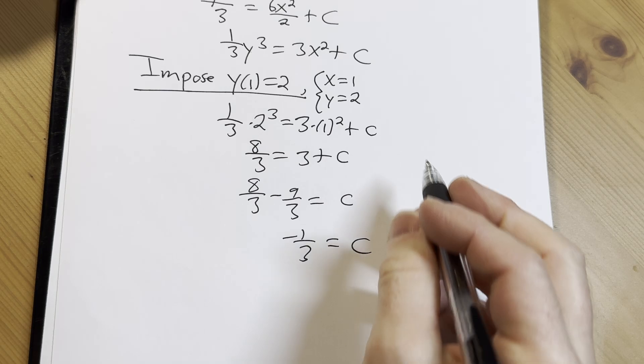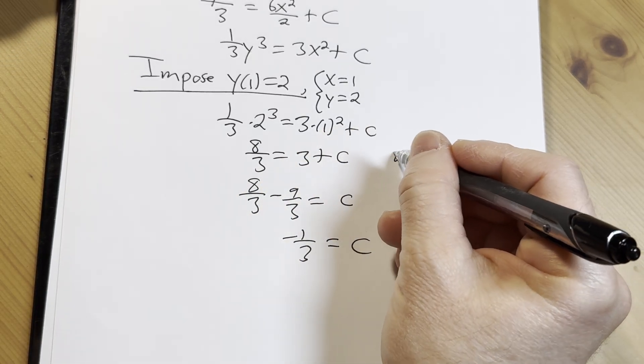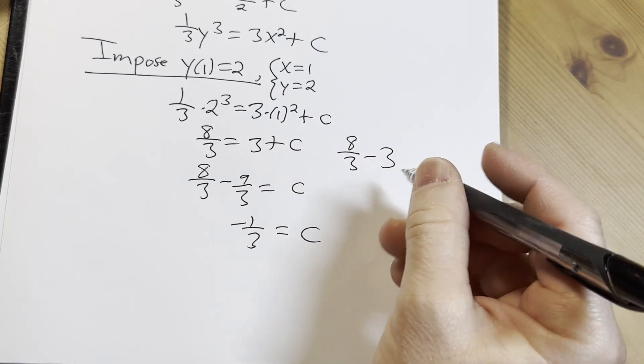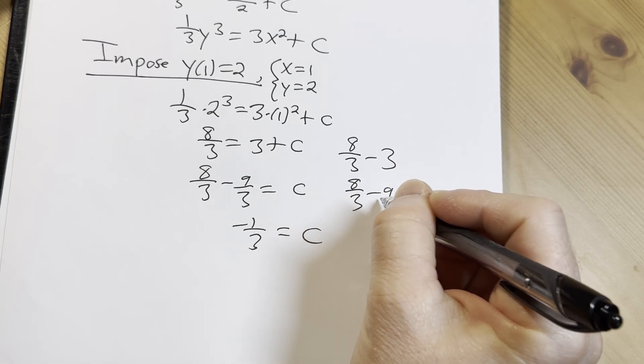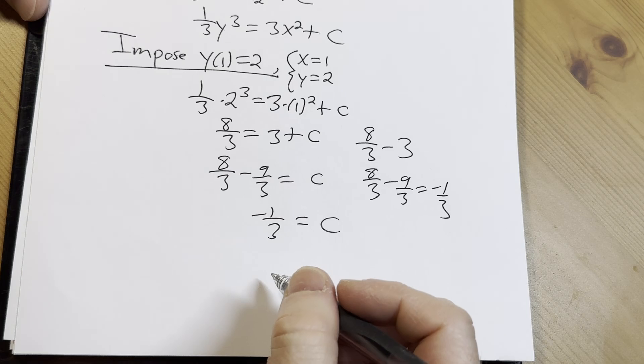That went pretty quickly there at the end, but basically what we did was 8 thirds minus 3. And you can think of 3 as 9 thirds. So this is 8 thirds minus 9 thirds, which is negative 1 third.